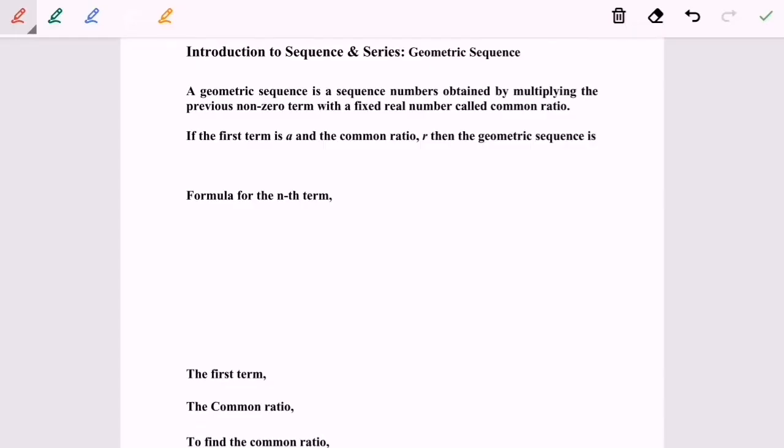Hello everyone, so now I'm going to discuss the geometric sequence. A geometric sequence is a sequence of numbers obtained by multiplying the previous non-zero term with a fixed real number called a common ratio.